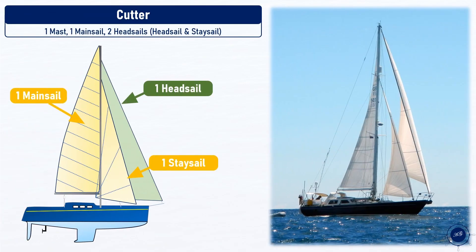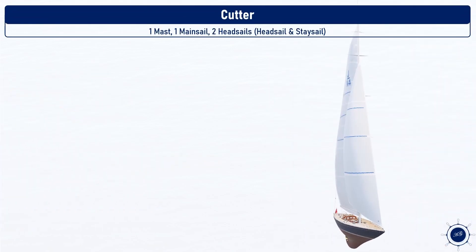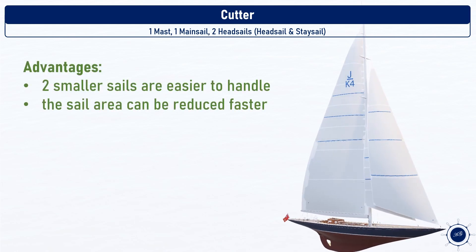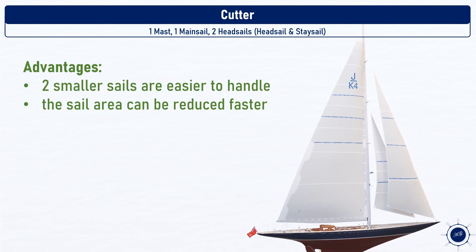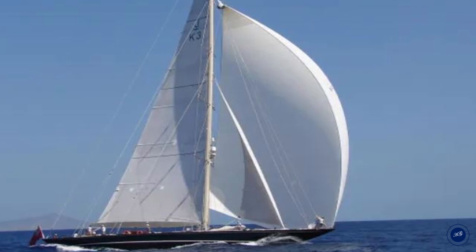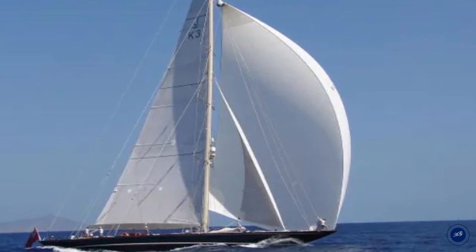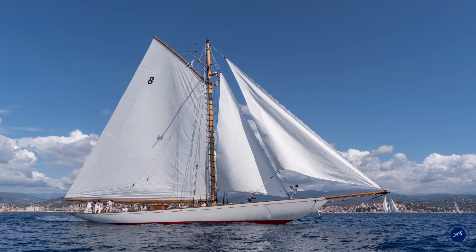A cutter rig means two headsails and one mainsail. The larger headsail is called the headsail, and the smaller one the staysail. The sail area is divided equally between the mainsail and the headsail. The advantage of two smaller headsails is that they are easier to handle and can be stowed faster, or the sail area reduced when the wind increases. In the past, the headsail was often attached to the jib boom, but modern rig designs dispense with the jib boom and instead have a bowsprit to which the jib is tensioned.